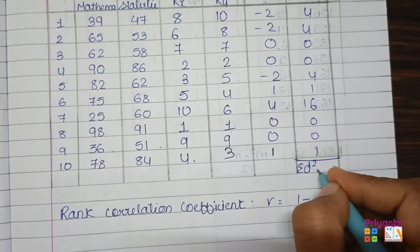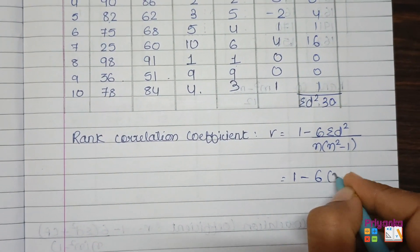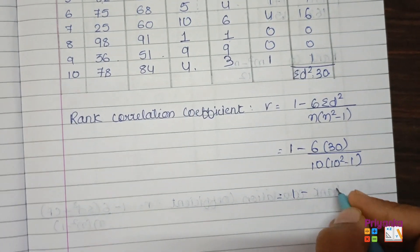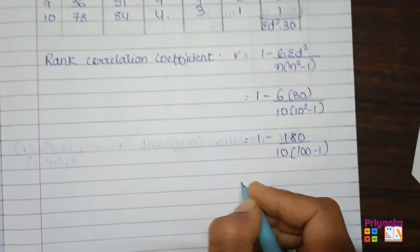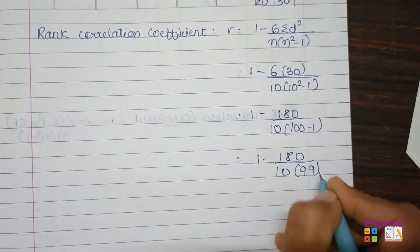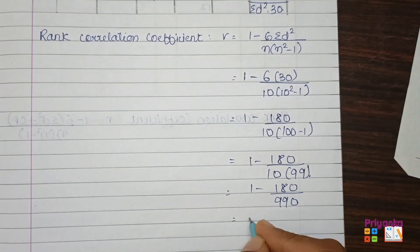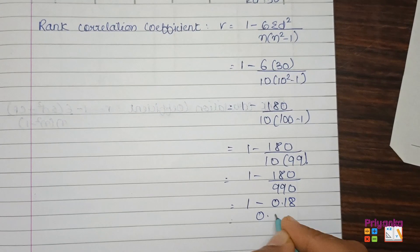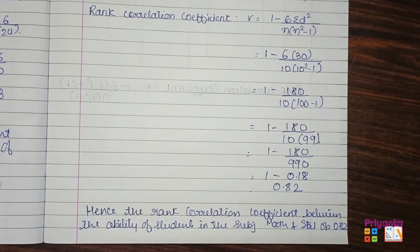The total sigma D² is 30. Now apply the formula: r = 1 − (6·ΣD²) / (n(n²−1)), with n = 10. That gives 1 − (6×30) / (10×(100−1)) = 1 − 180/990 = 1 − 0.18 = 0.82. Hence the rank correlation coefficient between the ability of students in mathematics and statistics is 0.82.